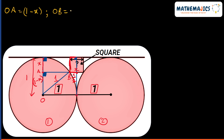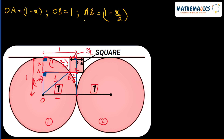We can also find the length of AB. This whole length is 1 because, as we drew the two blue lines, this forms a square of side 1. This part is half of the side length of the square, so this part is x/2. Therefore this other part will be 1 minus x/2, and since this is a small rectangle, AB is also 1 minus x/2.